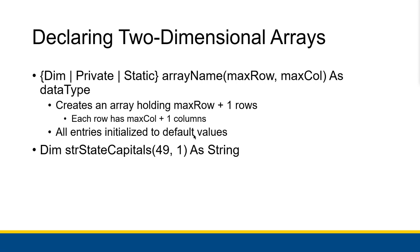All entries are initialized to their default values. For example, if I have this state capitals array that only holds strings and I want to store both the name of the state and the name of its capital — say, California and Sacramento — for every single state, I would give it 49 as the max row and 1 as the max column. Since we start counting at zero, this actually gives 50 states with two columns: one for the state name and one for the city name.